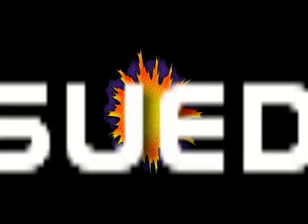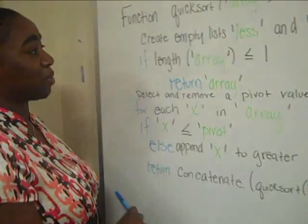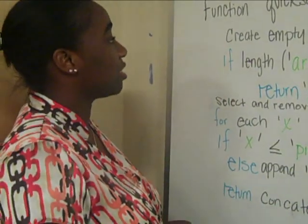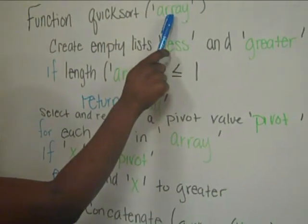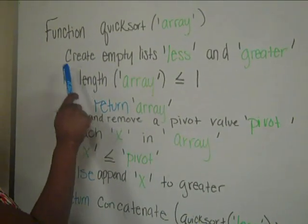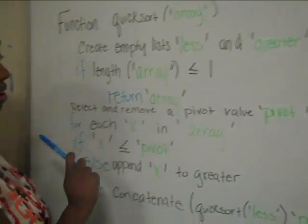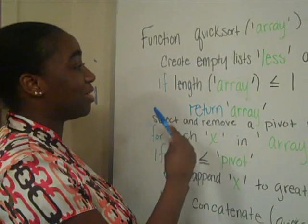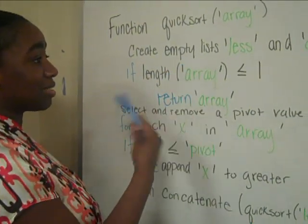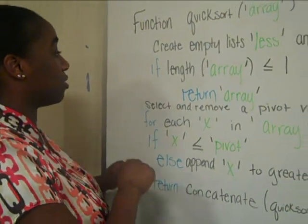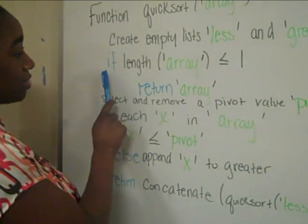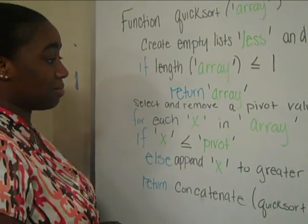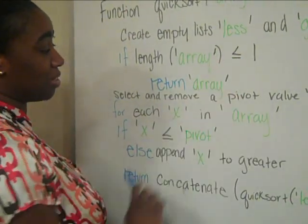Here is the pseudocode for Quicksort. This is the function to sort the Quicksort array or method, depending on whether you're using C++ or Java. The function Quicksort accepts an array. Within the method, you create an empty list, a less list, and a greater list. Depending on which language you're using, you might use a linked list, an array list, or a regular array. There's an if statement: if the length of the array is less than or equal to 1, it returns the array, because an array of that size is already sorted.